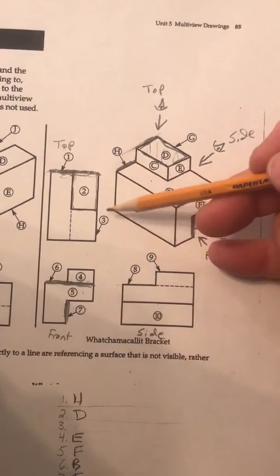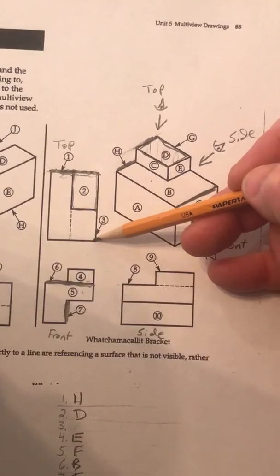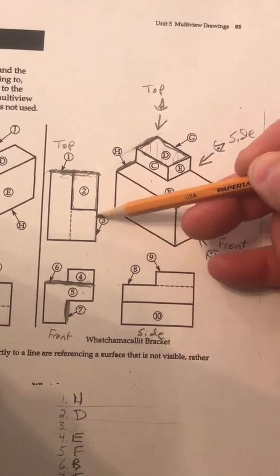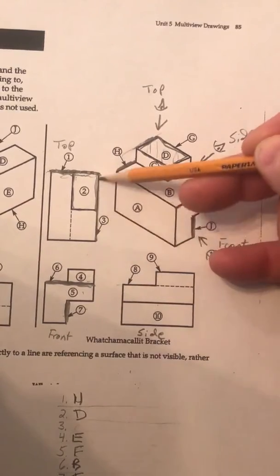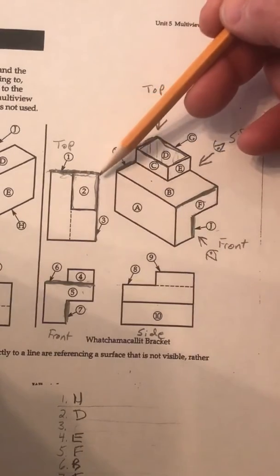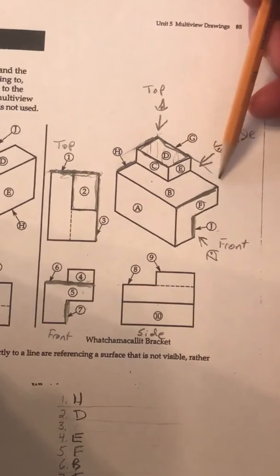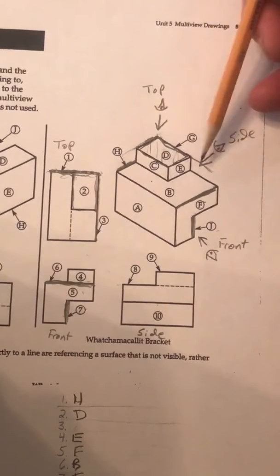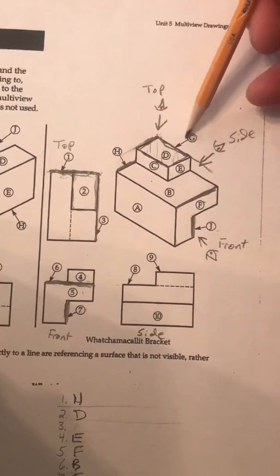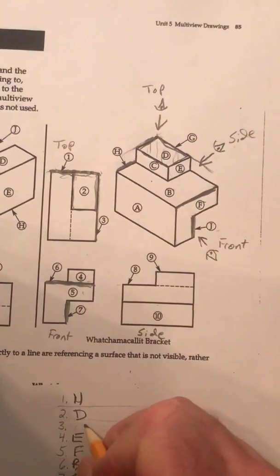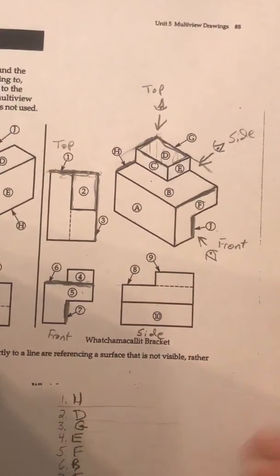So, number 1 then relates to letter H. Applying the same concept over here, 3, this line 3 here, relates, if I come to this corner, so that's there, that's kind of along this line here. So, I can see that 3 relates to G. So, I'm going to put G up there with that.